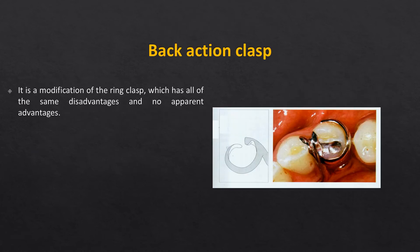The back-action clasp is like a ring clasp, but the undercut is on the buccal surface and it is not used for a tilted molar. It has a long clasp originating from one minor connector that encircles the tooth all around to the opposite side, making it more flexible. It produces more torquing forces on the abutment teeth and is not very retentive.